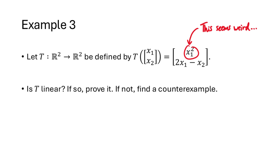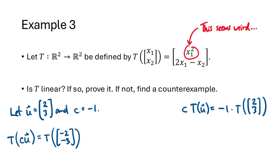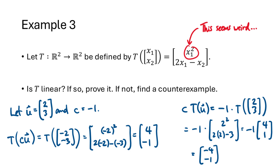To make an educated guess, we focus on the x1-squared term and pick numbers where squaring makes a difference — avoiding x1 = 0 or x1 = 1, since squaring those doesn't change them, and perhaps using negatives since squaring a negative gives a positive. Let u = (2, 3) and c = −1. Computing T(cu) gives (4, −1), while c·T(u) gives (−4, −1). Since those are not equal, this counterexample shows that T is not a linear transformation.